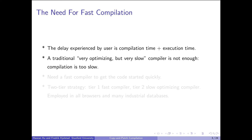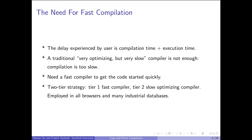Since the delay experienced by the user is the sum of the compilation time and the execution time, a traditional very optimizing but very slow compiler is not enough. As an example, LLVM O3 takes 4.5 seconds to compile a TPC-H database query in a commercial database, and Google Chrome can take 49 seconds to compile the module powering the AutoCAD online app. So we need a fast compiler to get started quickly.